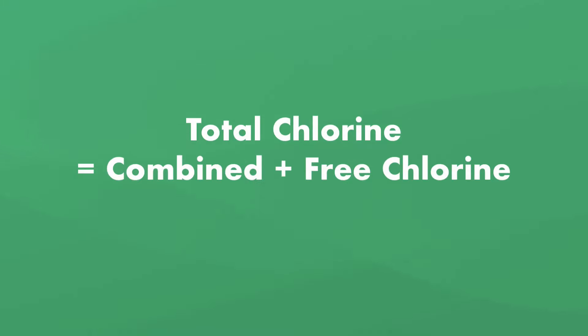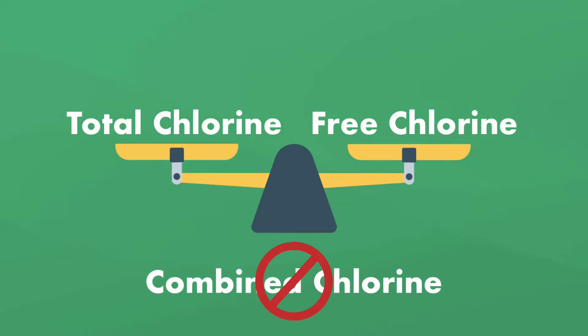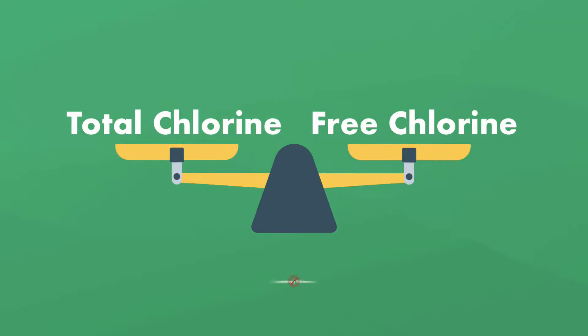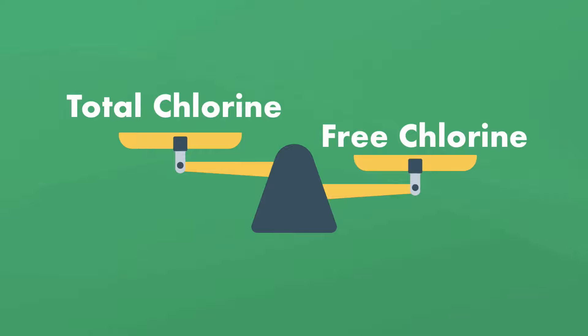And finally, there's total chlorine. Total chlorine is the sum of combined chlorine and free chlorine in your pool water. If total and free chlorine levels are the same, there's no combined chlorine in your water, meaning none of it has been used up yet. If the total chlorine is higher than the free chlorine level, the difference of the two is the combined chlorine level.